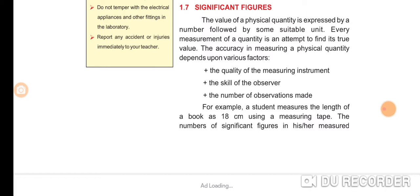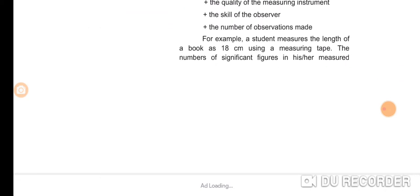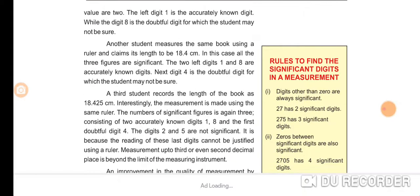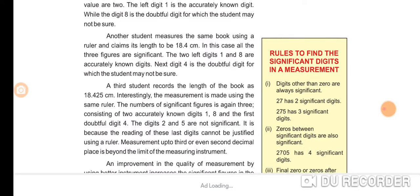For example, a student measures the length of a book as 18 centimeters using a measuring tape. The number of significant figures in his measured value is two. The left digit 1 is the accurately known digit, while the digit 8 is the doubtful digit for which the student may not be sure.